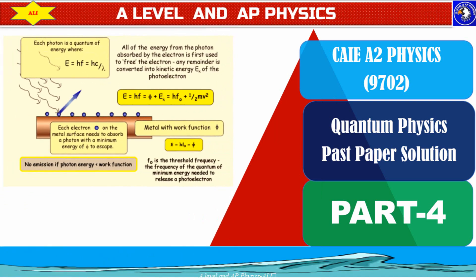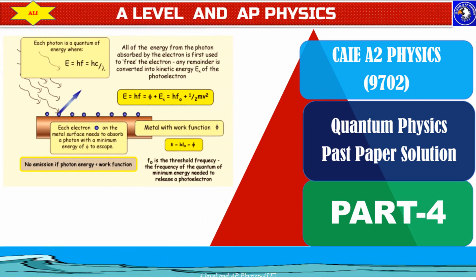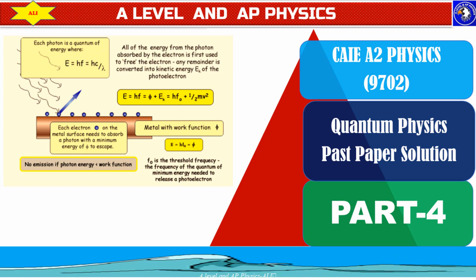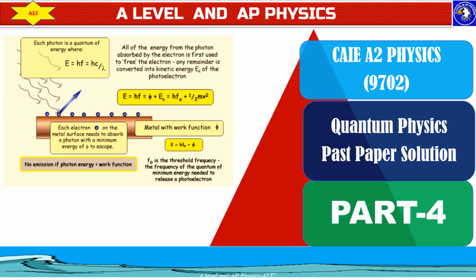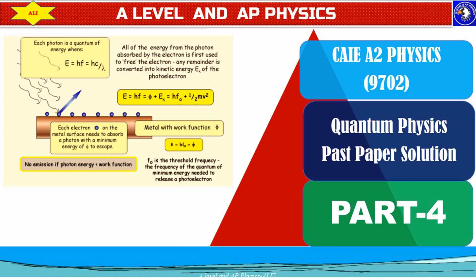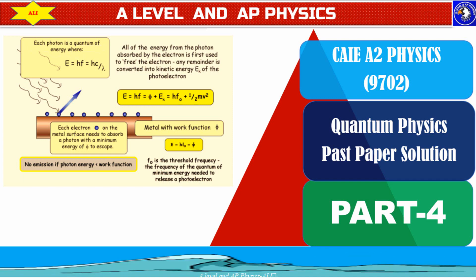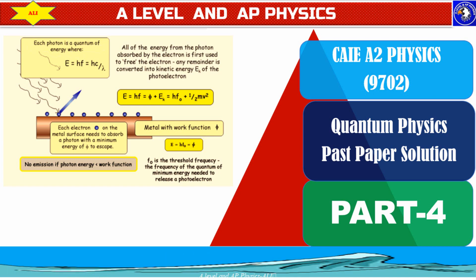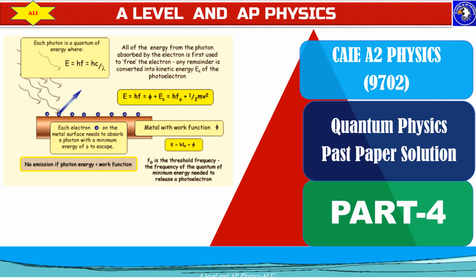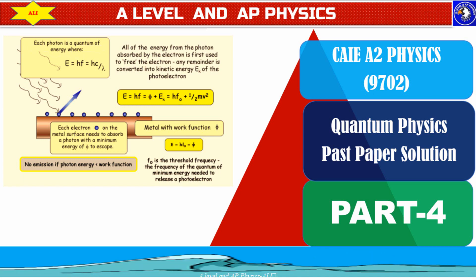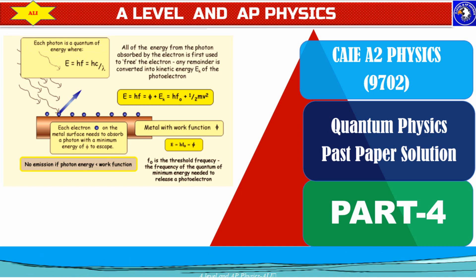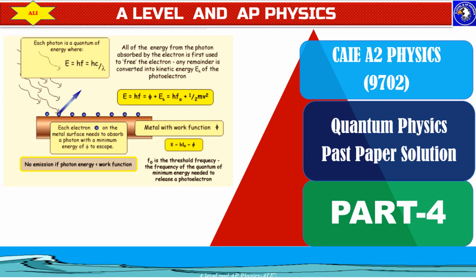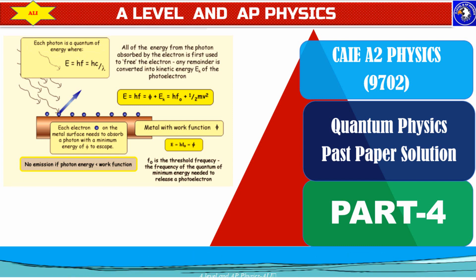Welcome to A-Level and AP Physics, a place where you can improve your understanding of physics with confidence. In today's class we will talk about a quantum physics past paper question. In this lesson I'll explain how to calculate momentum and energy of a photon, how energy is conserved when a photon is incident on an electron, and how to calculate the angle between the deflected photon and electron.